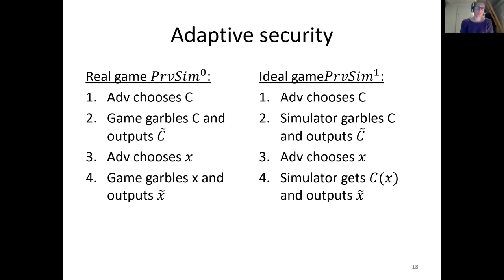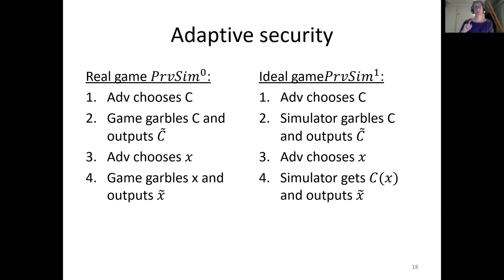Adaptive security is defined — also by Bellare, Hoang, and Rogaway, in a different paper (Eurocrypt 2012) — with another game. In the real game, the adversary first chooses a circuit to be garbled, the game garbles it, and then the adversary chooses an input adaptively — after seeing the garbled circuit — and the game garbles the input. In the ideal game, the adversary chooses a circuit, then the simulator garbles it, then the adversary chooses x, and the simulator gets C(x) — not x — and must output a garbled x. We say a garbling scheme has adaptive security if those two games are indistinguishable.